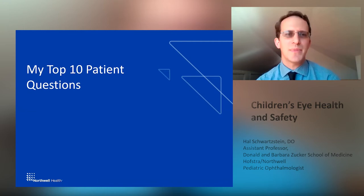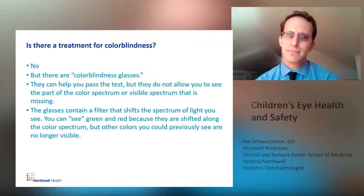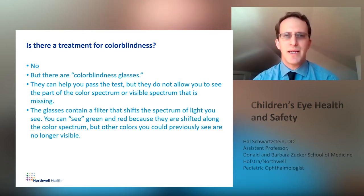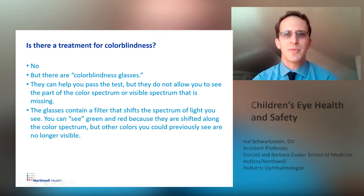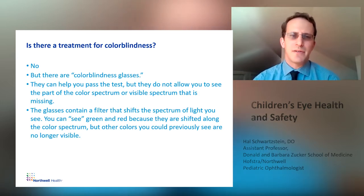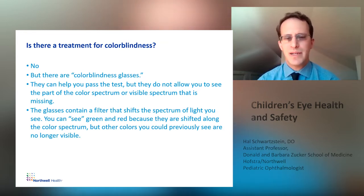Here are my top 10 patient questions. Question number 10: is there a treatment for colorblindness? No, but you may have seen colorblindness glasses. They can help you pass the test, but they do not allow you to see the part of the color spectrum that is missing. The glasses contain a filter that shifts the spectrum of light you can see. You can see green and red because they are shifted along the color spectrum, but there are other colors that you could previously see which are no longer visible. So it's kind of playing a game.